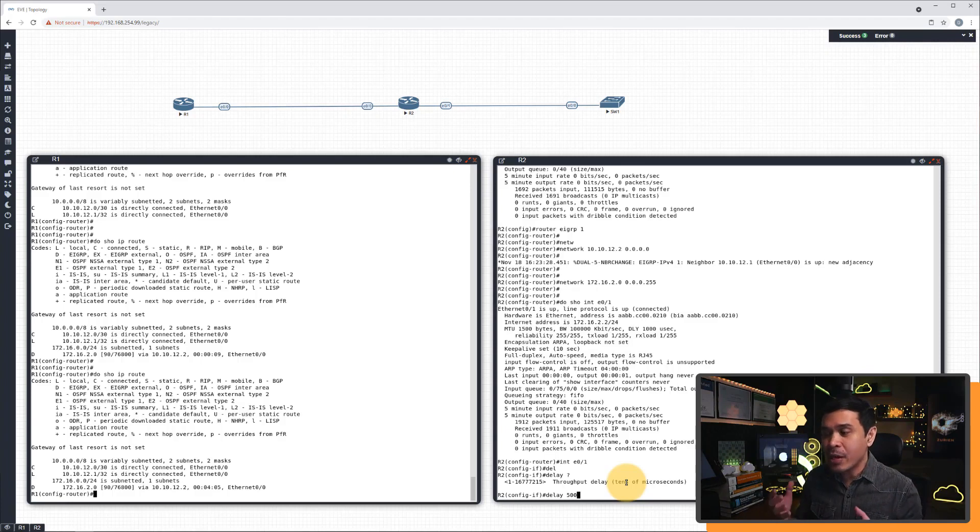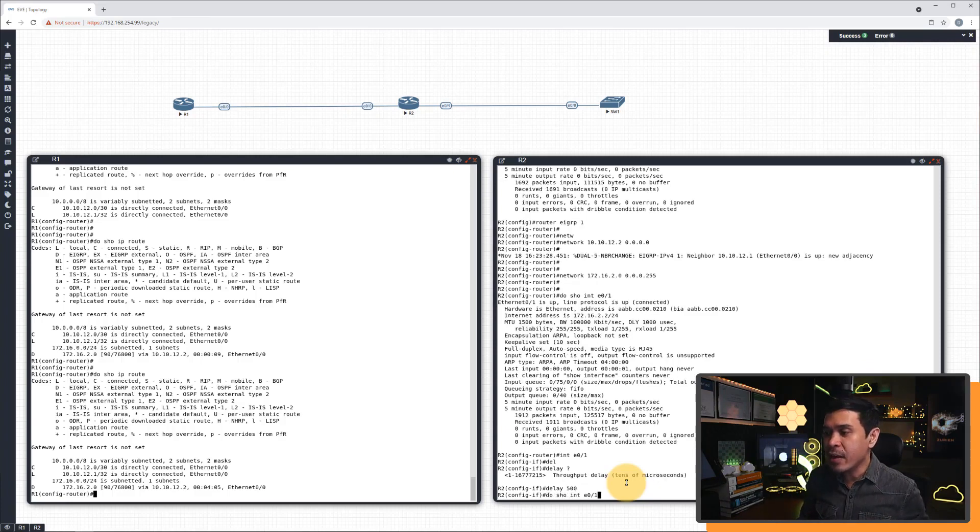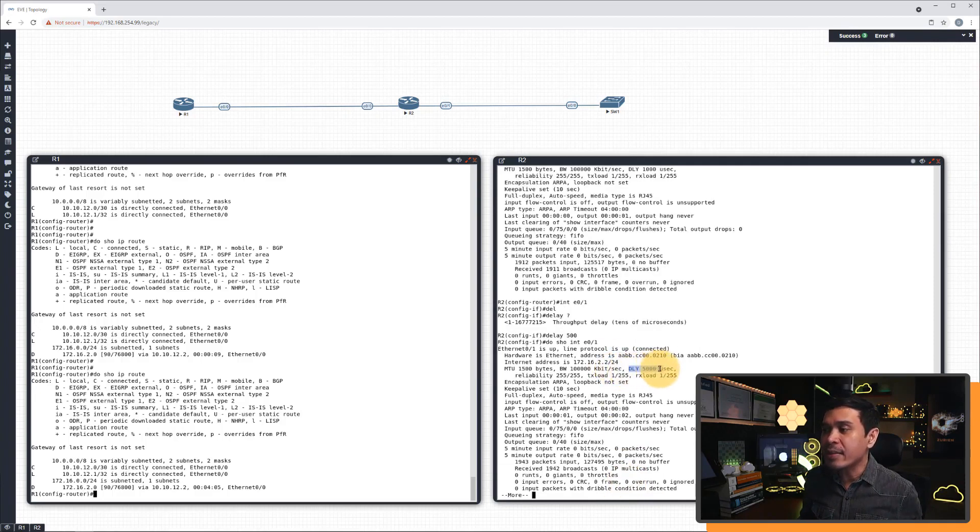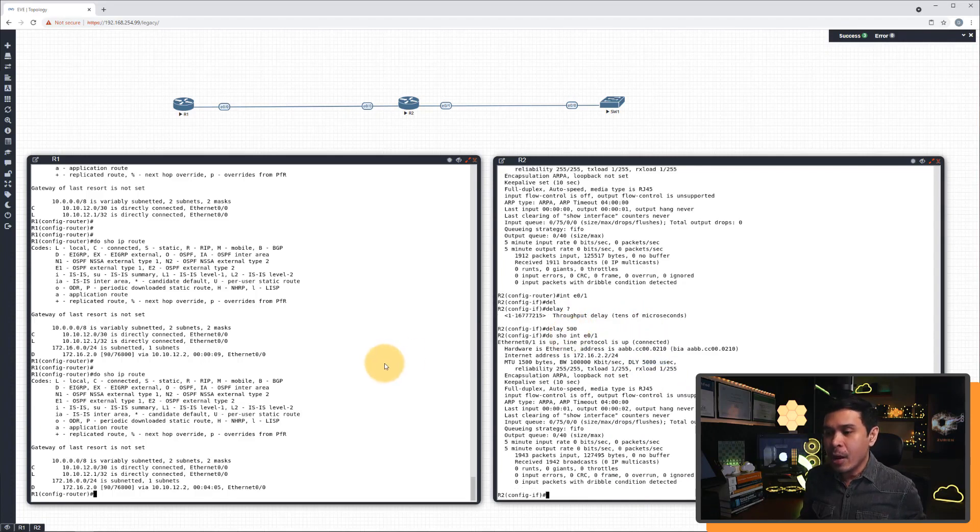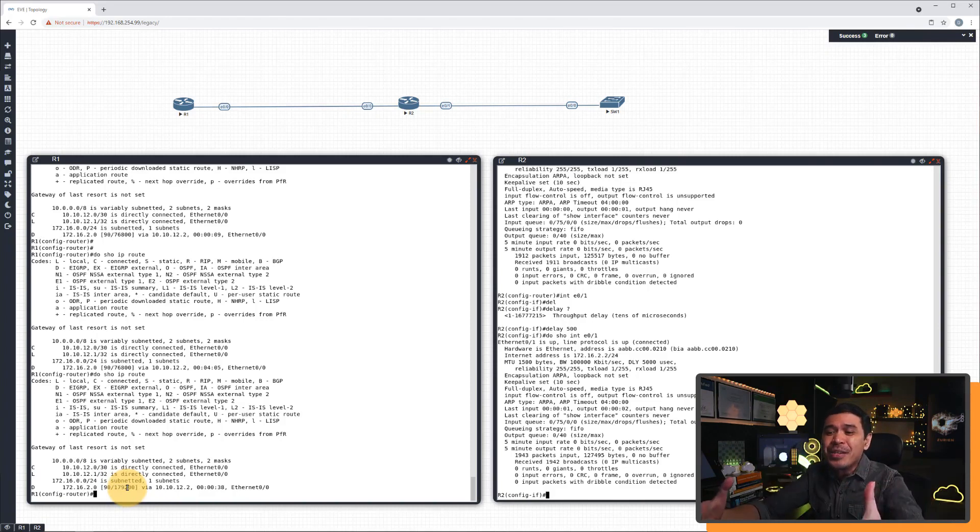I'm going to hit enter. And let's verify again, the show interface E01. Look at that. The delay value is now changed to 5,000 microseconds, although we use delay 500 in our command. Now, I'm going to verify if our metric has changed by rerunning this command show IP route. This is the moment of truth. And I'm going to hit enter. But wait, before I hit enter, I'm going to close my eyes because I love suspense. I'm going to close my eyes and I'm going to hit enter. And there you go. Look at the result. It's exactly what we expected. We are successful. And this just proves that our algebraic computation of finding the delay value to set EIGRP metric to 179,200 is working properly.